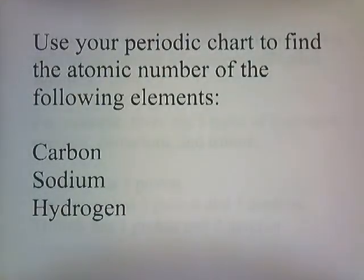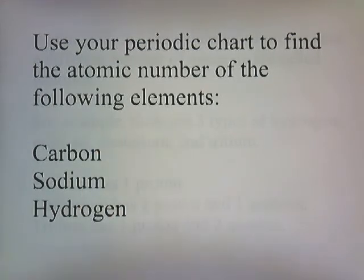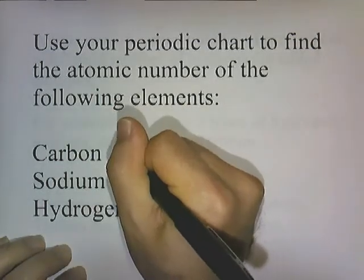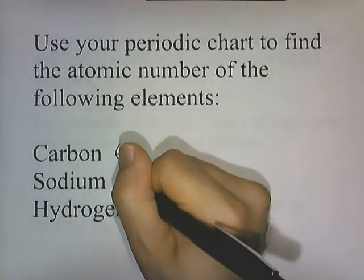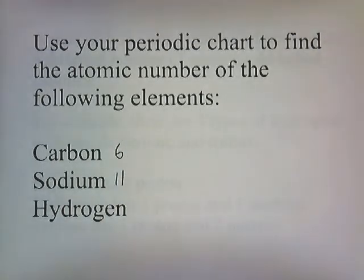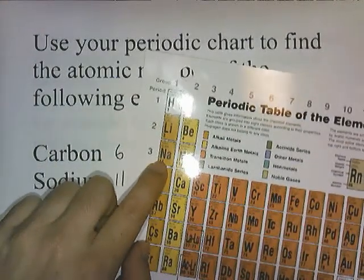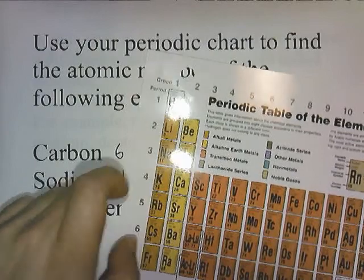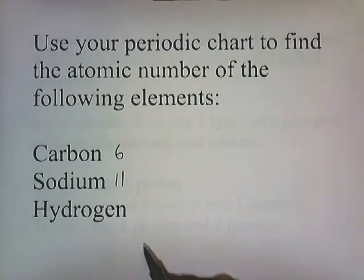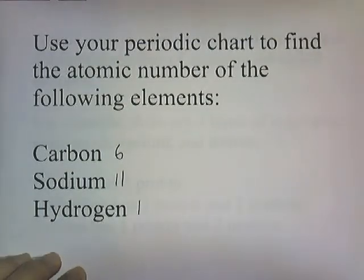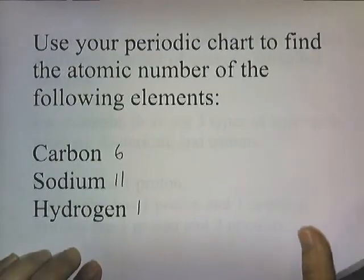Use your periodic chart to find the atomic number of the following elements. Carbon has an atomic number of six. Sodium has an atomic number of eleven. If you had trouble finding sodium, the symbol is Na — it doesn't start with the letter S. Sodium has eleven protons in the nucleus. Hydrogen has one proton in the nucleus.